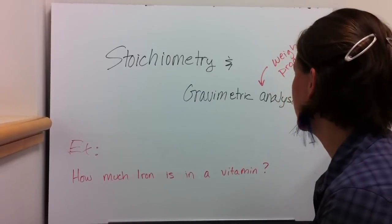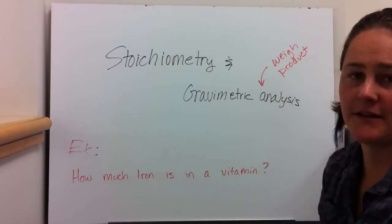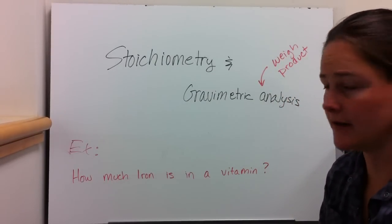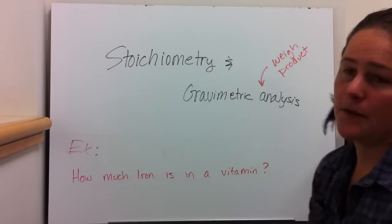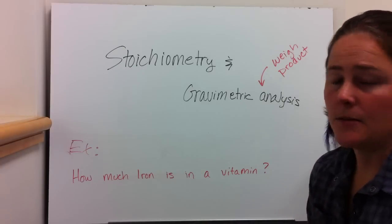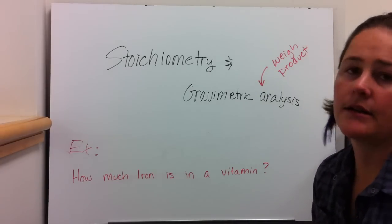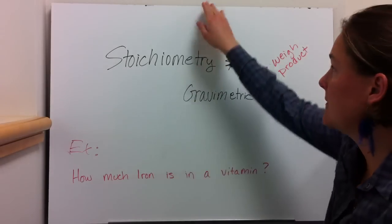We're going to talk about stoichiometry and gravimetric analysis. Gravimetric analysis just means that you're going to weigh the final product. We're going to go through the example in the book where you're looking at how much iron is in an iron-containing vitamin.